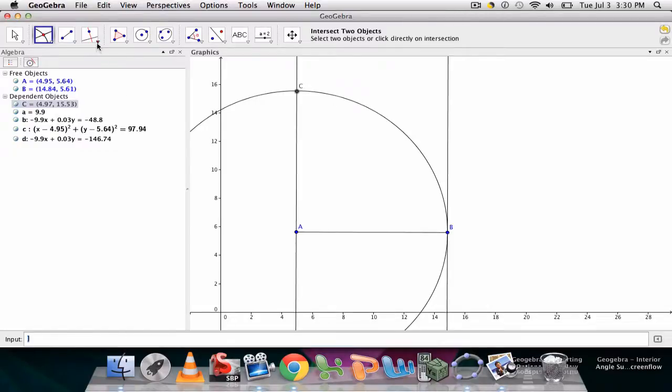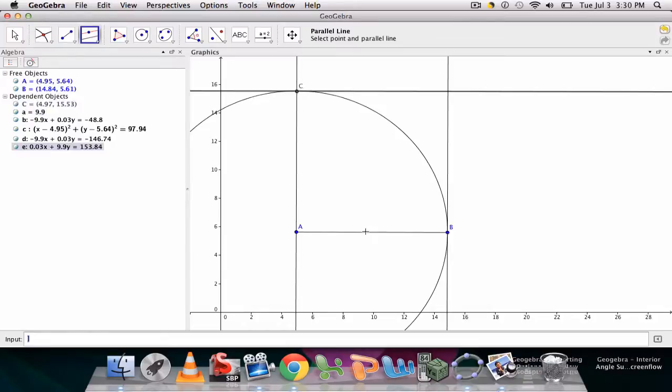And now what I do is select the parallel line tool. I want to select the point C and I want it to be parallel to line AB and create this line right here.